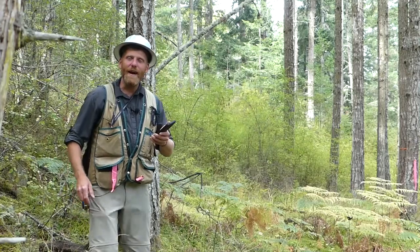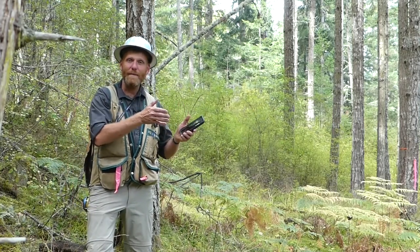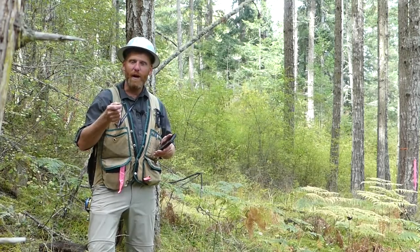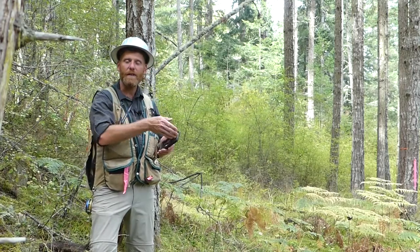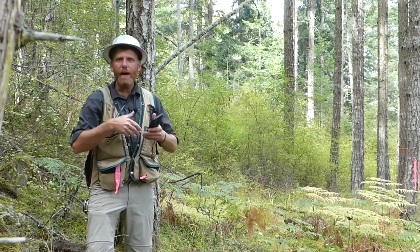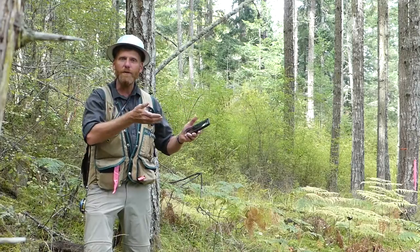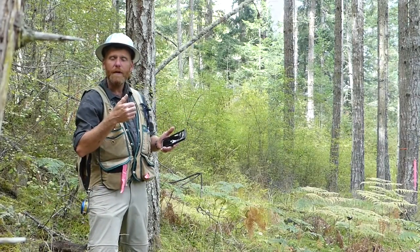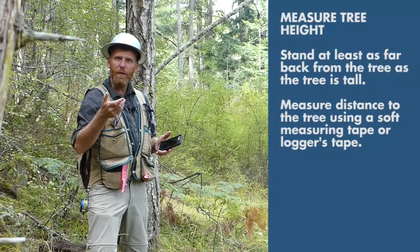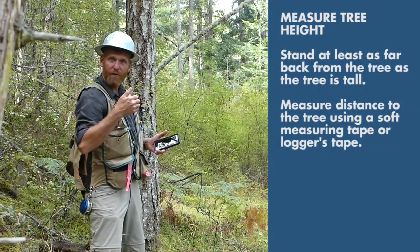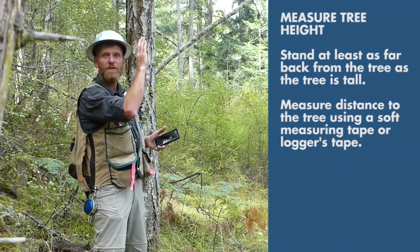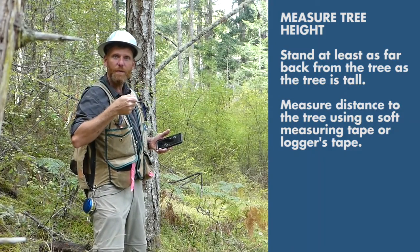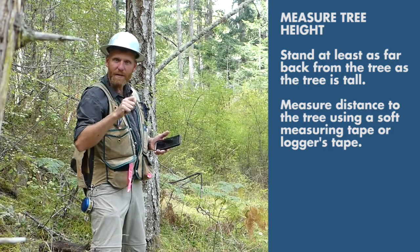Once you finish documenting both the diameters of the trees and the tree species, the next step in the inventory process is to calculate the height of each tree. I separate the height measurement from the other two measurements because you need to be a pretty significant distance back from the tree. The general rule of thumb is you want to be about as far back from the tree as the tree is tall. Once you have measured the distance from the tree, write down that measurement.